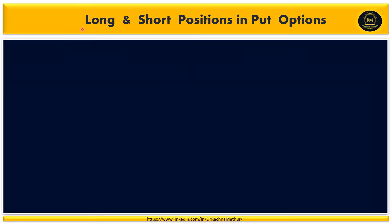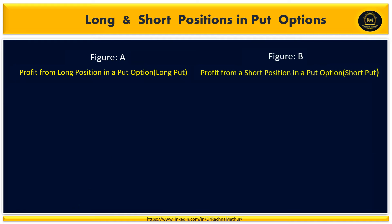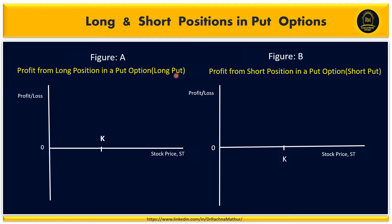Now we will see how to draw the lines for long and short positions in a put option. Figure A shows the profit from a long position in a put option — long put — and Figure B shows the profit from a short position in a put option — short put. Long put means you are getting a right to sell the underlying at a strike price of K. To get that right, you have to pay the option premium, so you start with a negative opening equal to the option price.